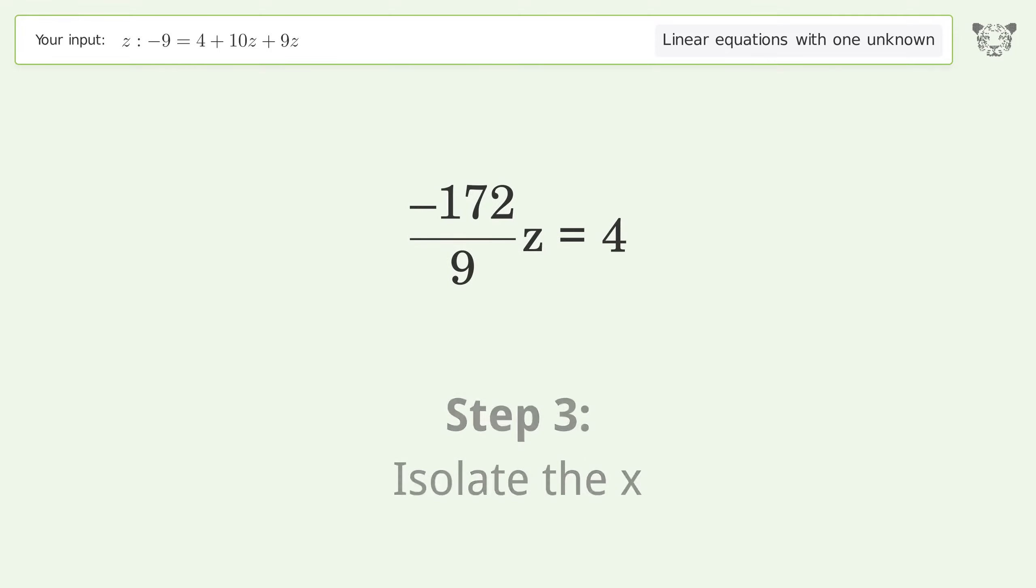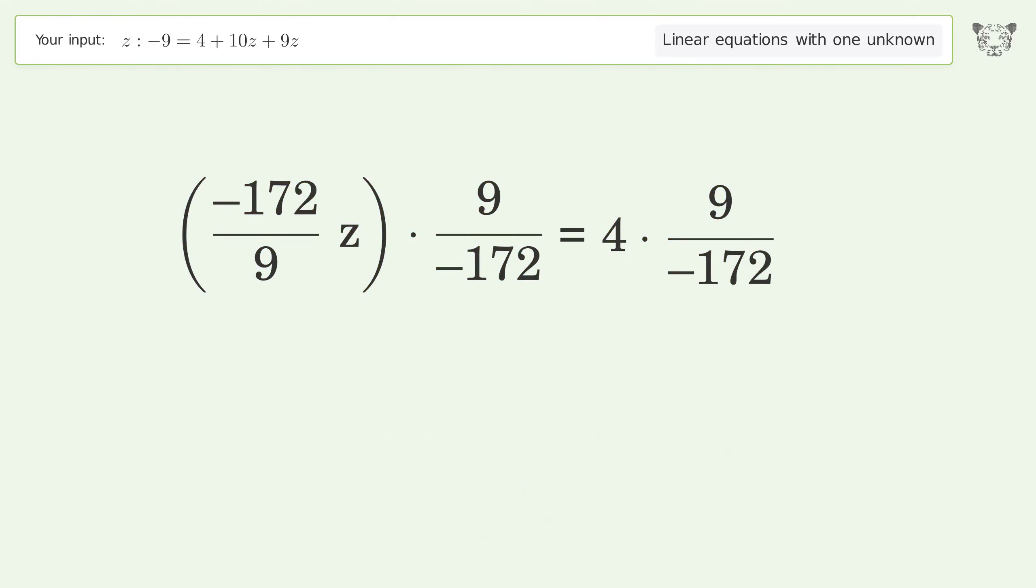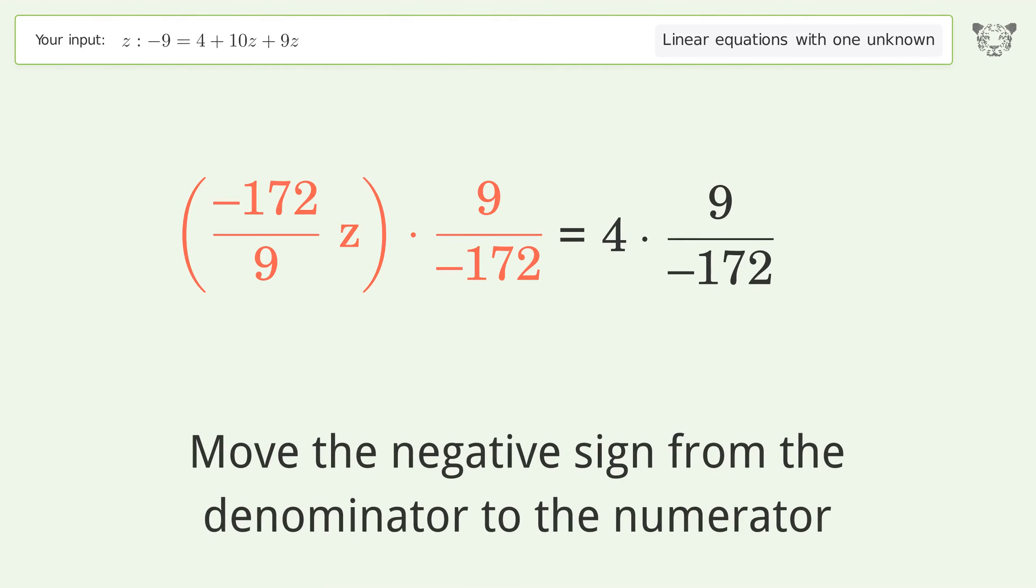Isolate the x. Multiply both sides by inverse fraction 9 over negative 172. Move the negative sign from the denominator to the numerator.